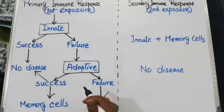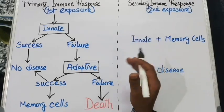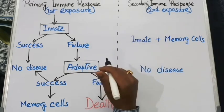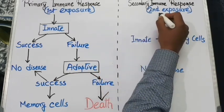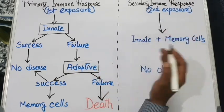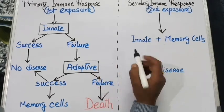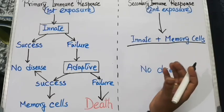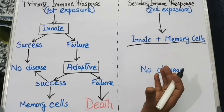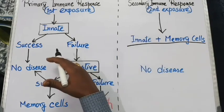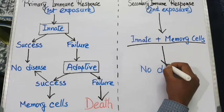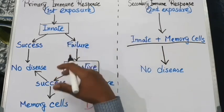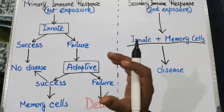In the case of secondary immune response — the second exposure to such pathogens — both innate immunity and the memory cells of the adaptive immunity are activated together. These two immune components fight against the germs or pathogens more effectively than before, leading to the absence of disease. Thus, primary and secondary immune responses act and fight germs in this manner.